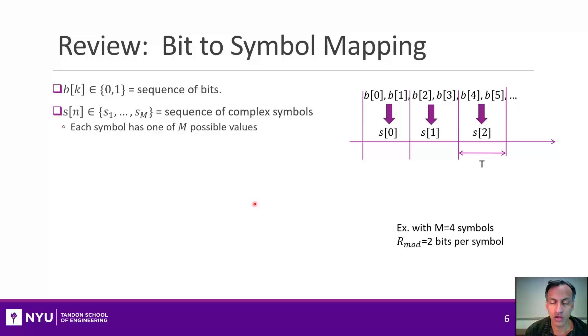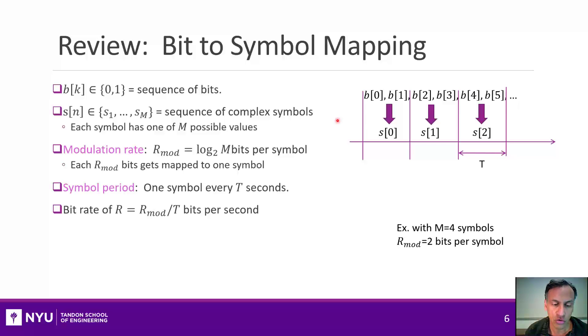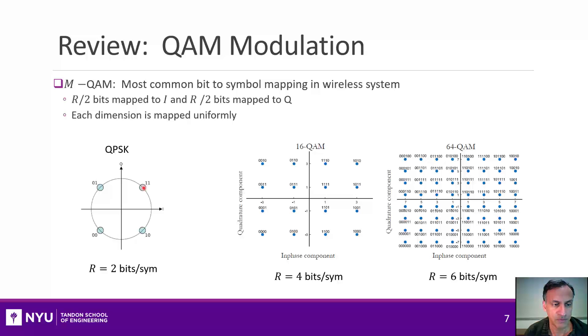Just a quick review of uncoded modulation. All of this is covered in your digital comm class. What you're doing is you're taking a sequence of bits and you're mapping them to complex symbols, like QPSK or so on. And you take some number of bits per symbol. The key terms that describe uncoded modulation are the modulation rate, which is the number of bits per symbol. You would have a symbol period, which is the duration of each symbol, which I'm going to denote by T. And that gives you the bit rate.